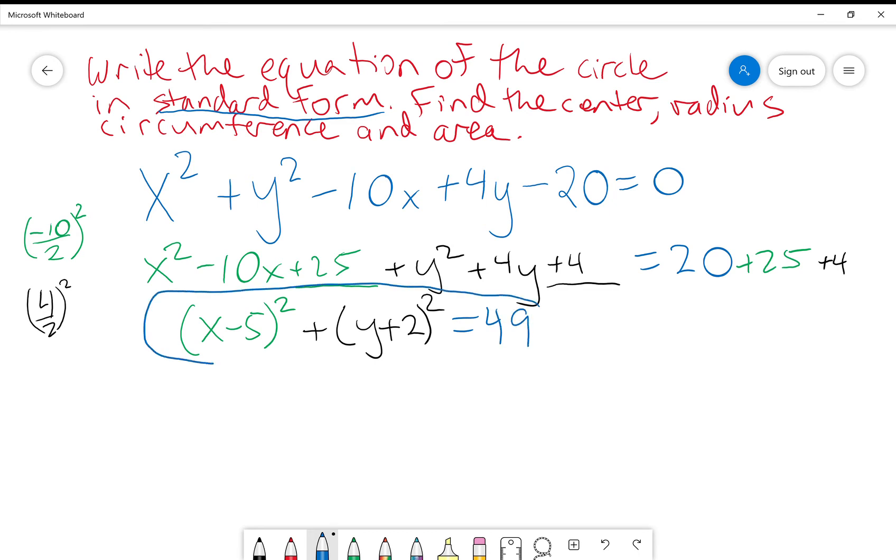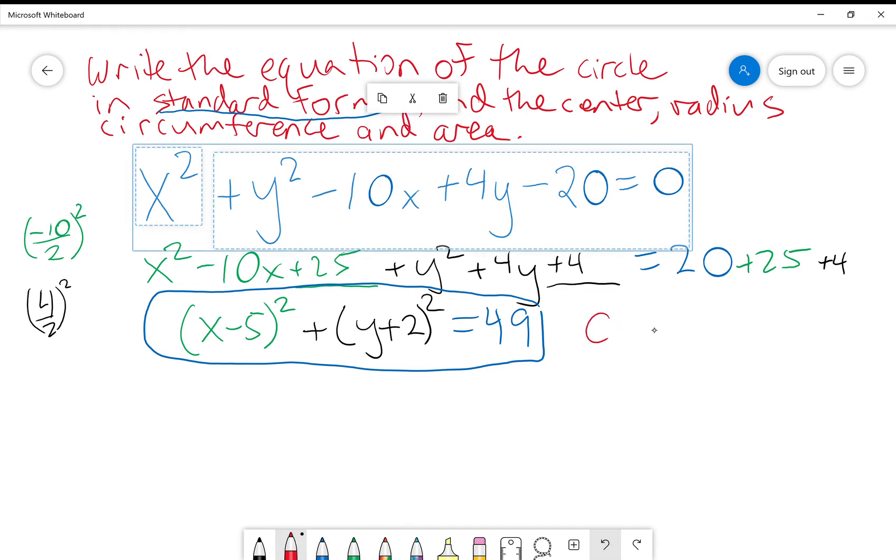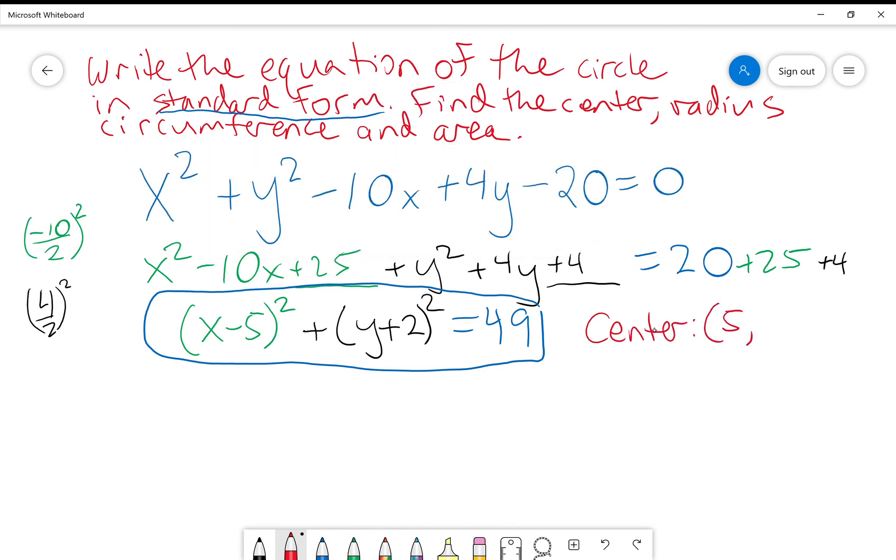Alright. So I have what's called the standard form of that circle. Now, my center is 5, comma, negative 2. Make sure that you do switch those signs, because it's x minus h, so it's the opposite sign of what you actually see.